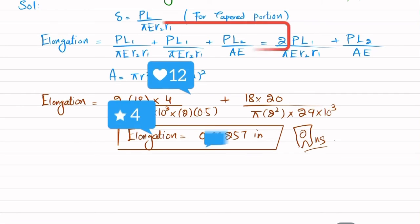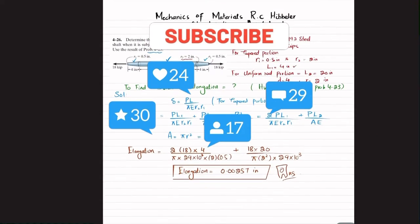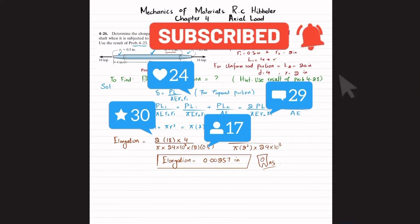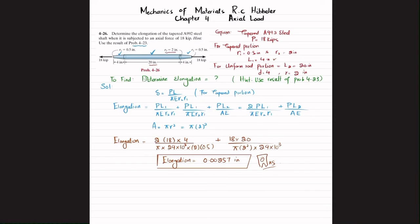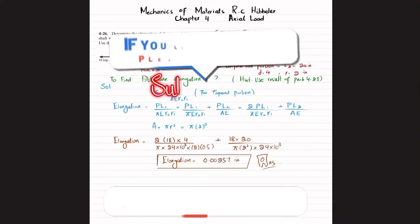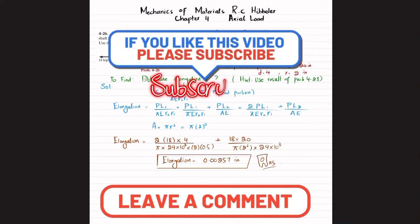So when you solve this, the elongation comes out to be 0.00257 inches. Due to this tensile loading, total elongation in this tapered A992 steel comes out to be 0.00257 inches. That was all about problem 4-26.